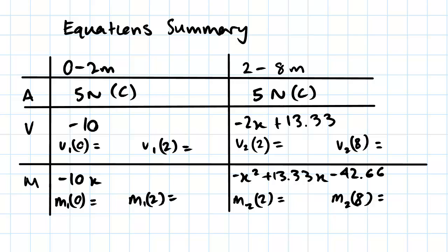Axial is constant throughout, so we have a 5 Newton compression force throughout the entire beam. That's because there was only one change in the axial loading.